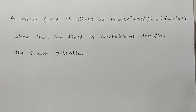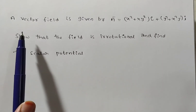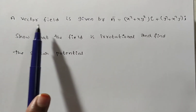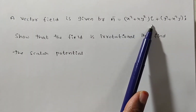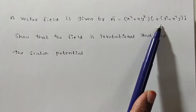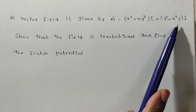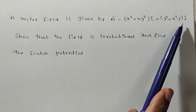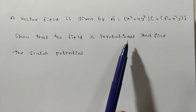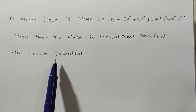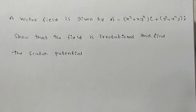Friends, now we are solving a problem on vector differential calculus. The given problem is: a vector field A bar is equal to (x² + xy²)i + (y² + x²y)j. Show that the field is irrotational and also find a scalar potential function.